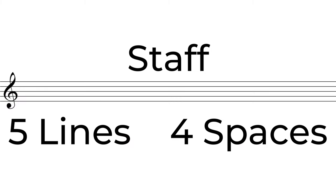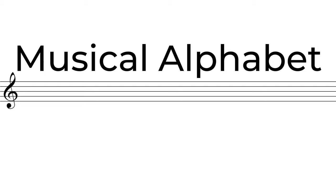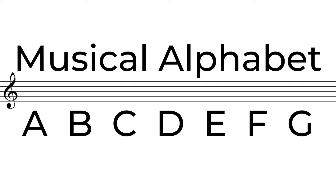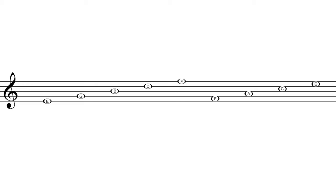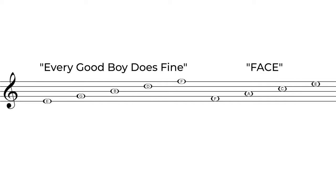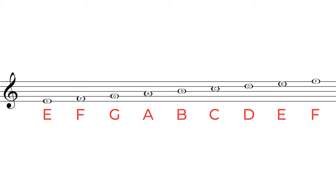To wrap up this video, let's review from the beginning. Our staff is made up of five lines and four spaces, and the musical alphabet contains the letters A through G. When there's a treble clef on the staff, we use the phrase Every Good Boy Does Fine to identify the notes on the lines, and we use the word FACE to identify the notes in the spaces. The notes move forward alphabetically going up the staff and they move reverse alphabetically going down the staff.